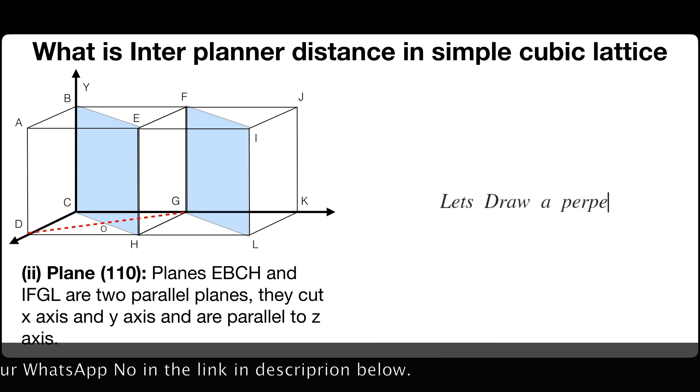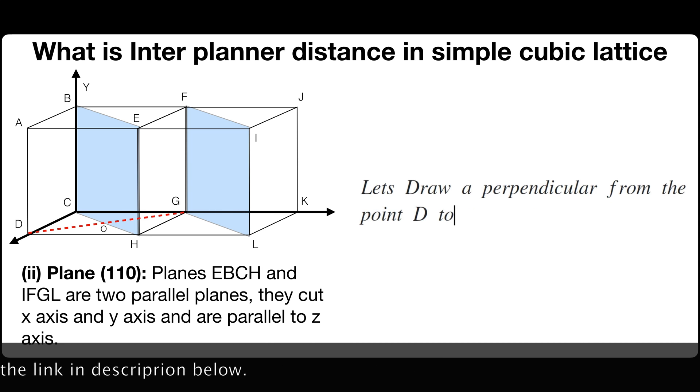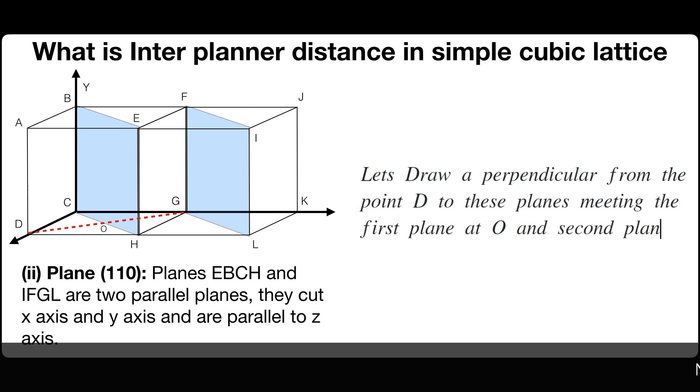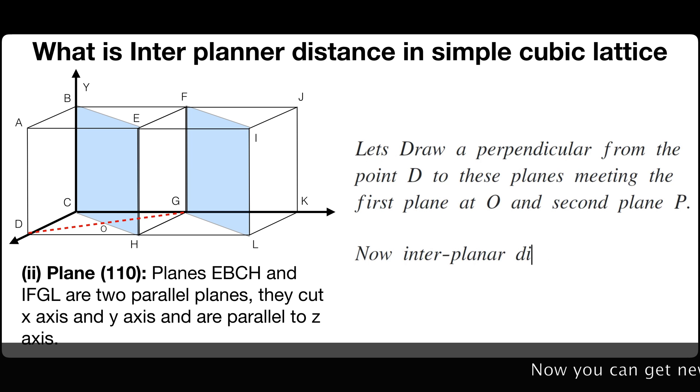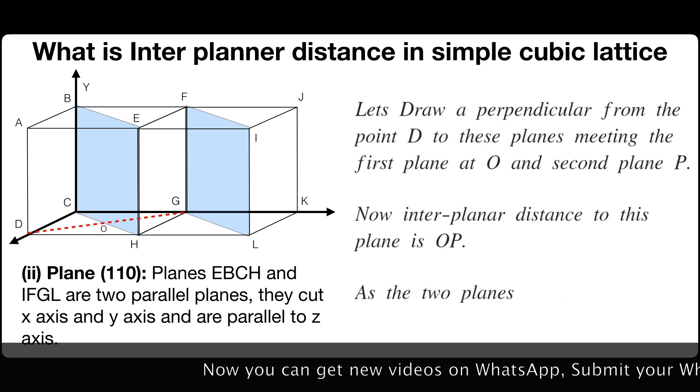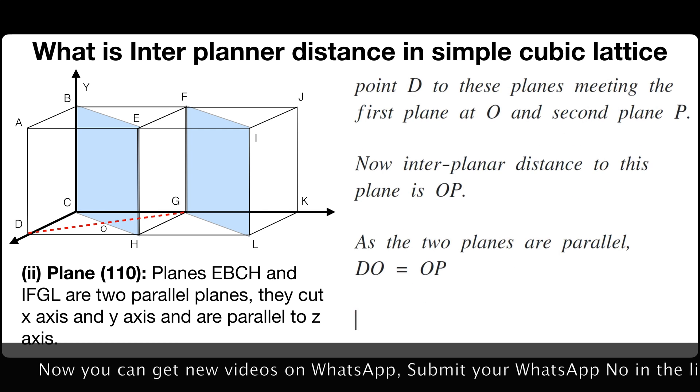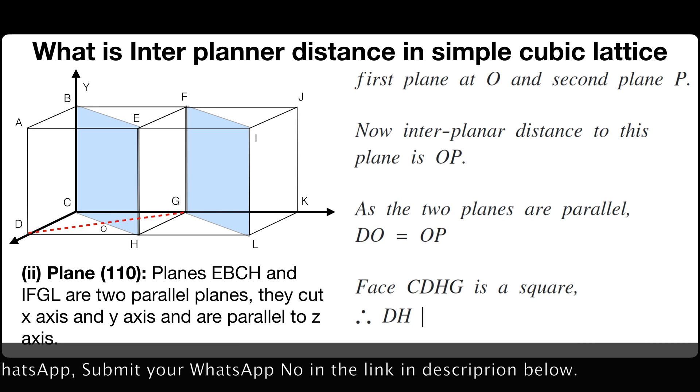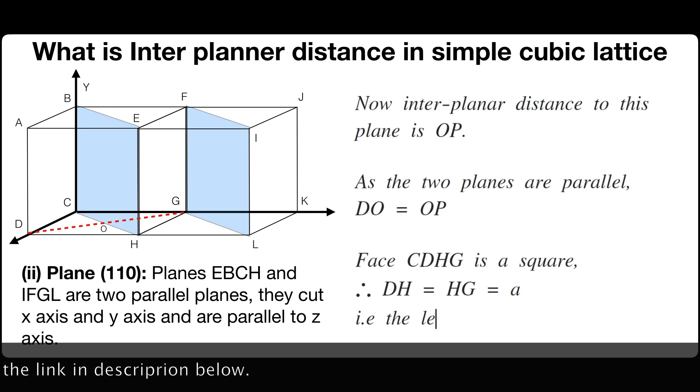Let's draw a perpendicular from the point D to these planes meeting the first plane at O and second plane at P. Now interplanar distance to this plane is OP. As the two planes are parallel, OD is equals to OP. Face CDHG is a square. Therefore, DH is equals to HG is equals to A that is the length of the cube.